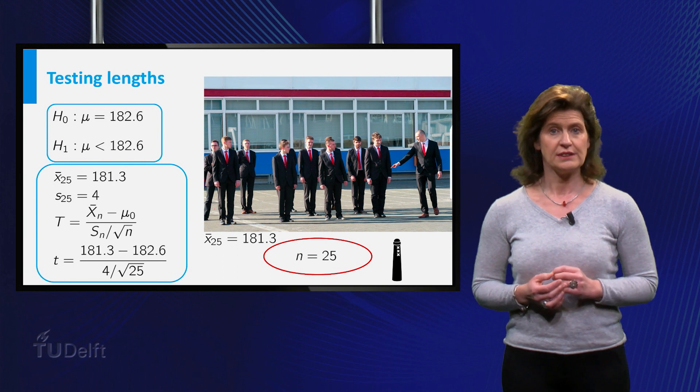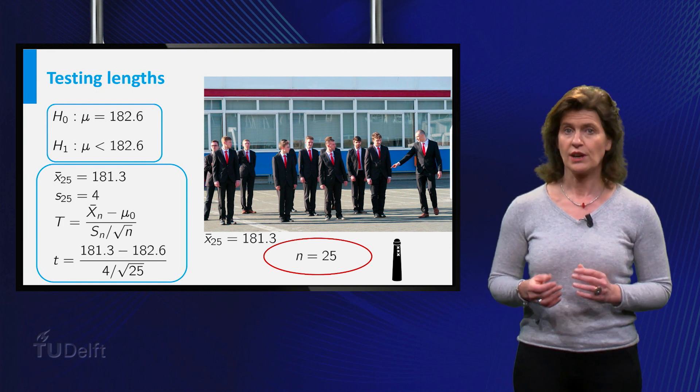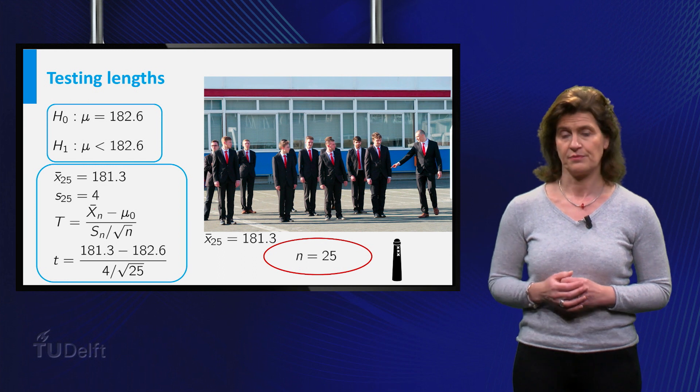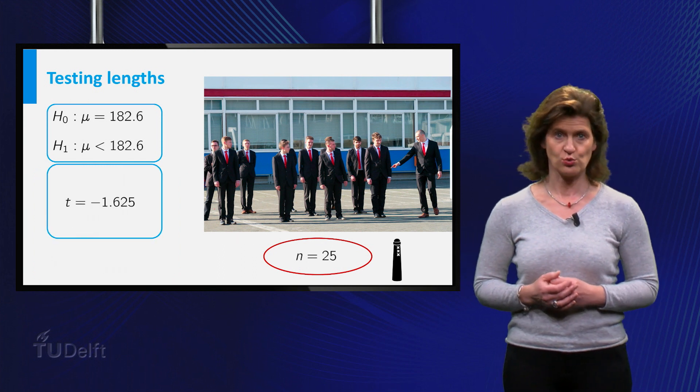So the value of t is equal to the number obtained by doing the calculations on the slide. This is equal to minus 1.625.